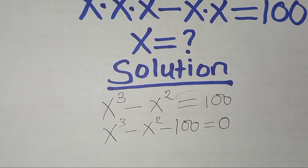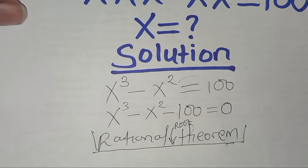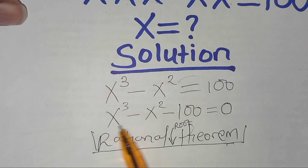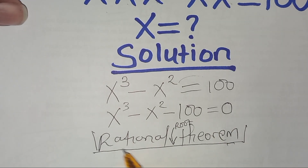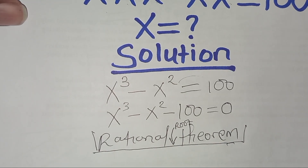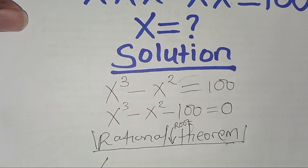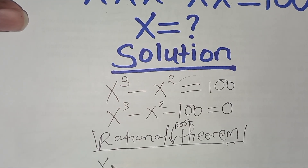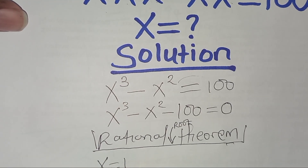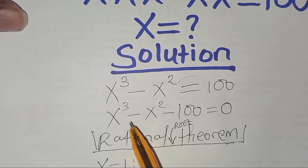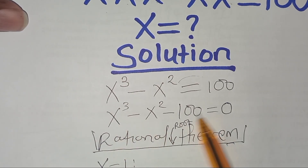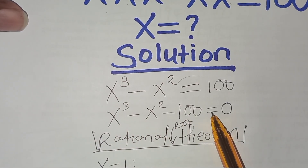Now to solve for the value of x, we apply the rational root theorem, whereby we take the rational roots among the factors of the constant term. Let's start with x equal to 1, and plug x equal to 1 into this cubic equation.